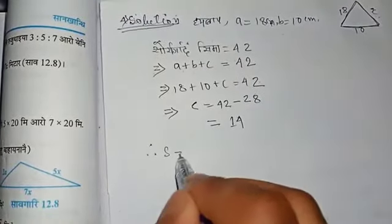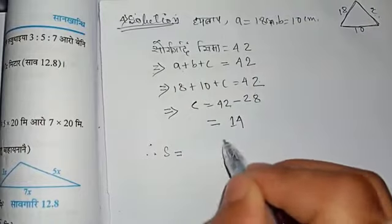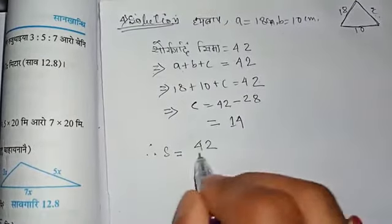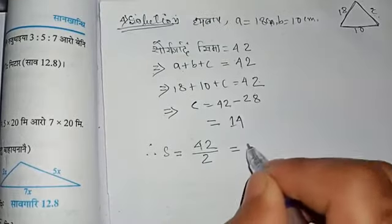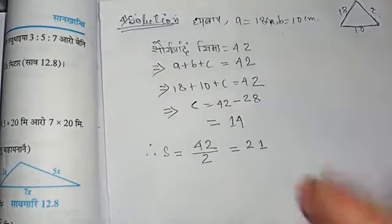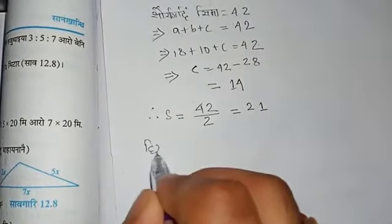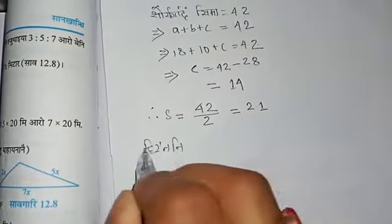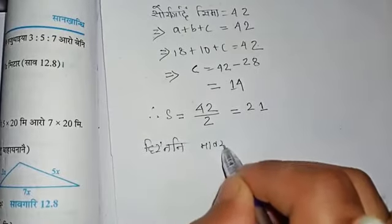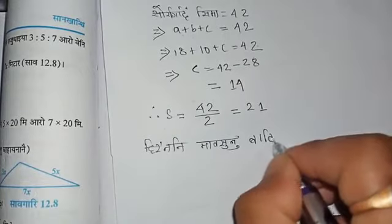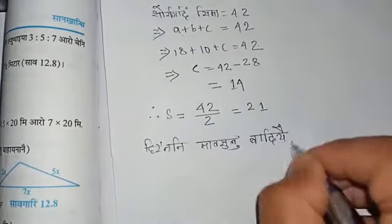We need to find S. Half of a plus b plus c, this is the S, the semi-perimeter. We will find the S.